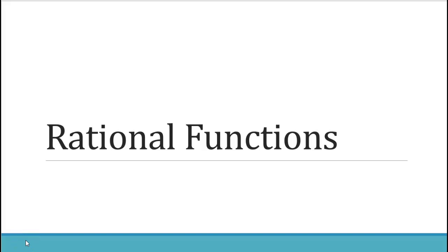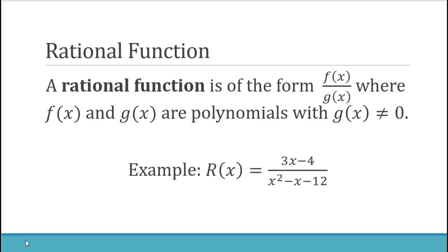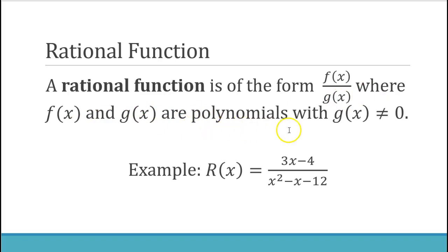Rational functions. A rational function is of the form f(x) divided by g(x), where f(x) and g(x) are specifically polynomials, with g(x), the denominator, not equal to zero.